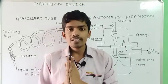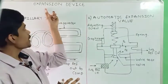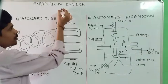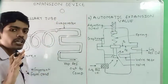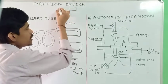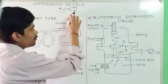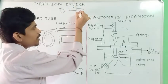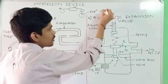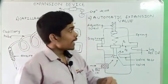Our next important component of the refrigeration system is the expansion device. Revising what we studied earlier: first was the compressor, in which the refrigerant gets compressed, then it is sent to the condenser, where the vapor refrigerant gets converted into liquid refrigerant. After the condenser it is sent to the receiver, and after the receiver it is sent to the expansion device.